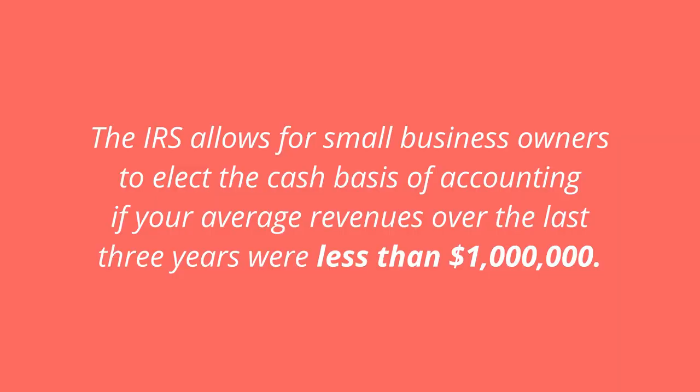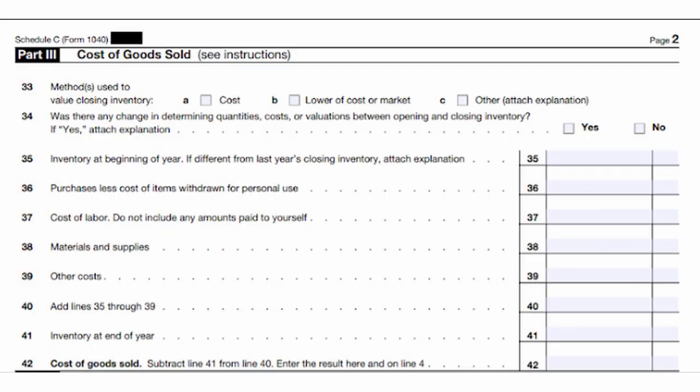This method functions on the cash basis of accounting, the basis of accounting that most small business owners use. On the cash basis of accounting, expenses are recorded when money is spent. The IRS allows small business owners to elect the cash basis of accounting if your average revenues over the last three years were less than a million dollars. At the end of the year, you will need to do an end-of-year inventory count to adjust your cost of goods sold figure for tax purposes. This end-of-year inventory count must be done by every business owner regardless of how you categorized your inventory purchases throughout the year.